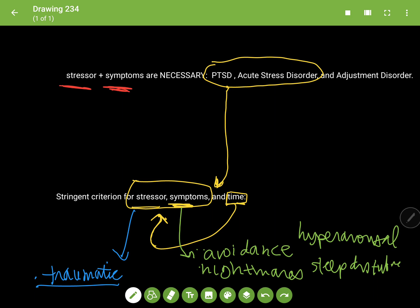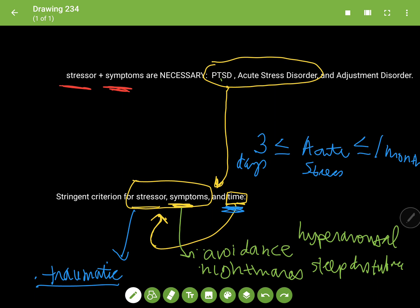The only thing that's different between PTSD and acute stress disorder is the time — that's what differentiates them. For acute stress disorder, you've got to have at least three days after the stressor and no more than a month. Whereas for PTSD, it's going to be more than one month.